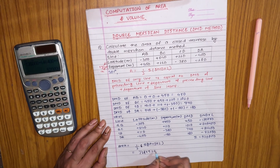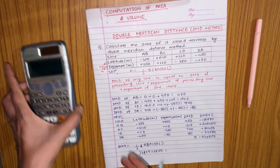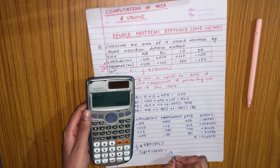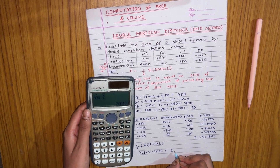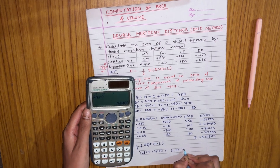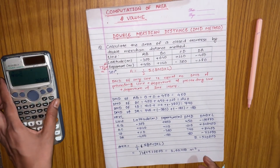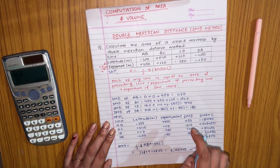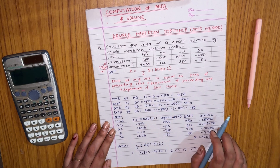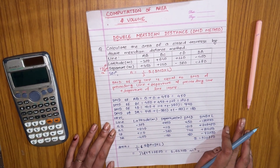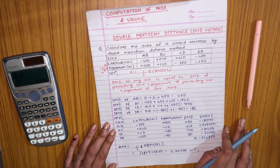This is the area of the closed traverse calculated by the DMD method. For more numerical problems, we will solve them in another video. Thank you so much for watching.